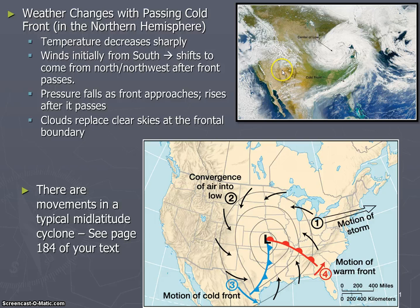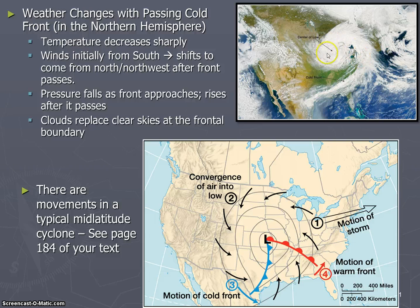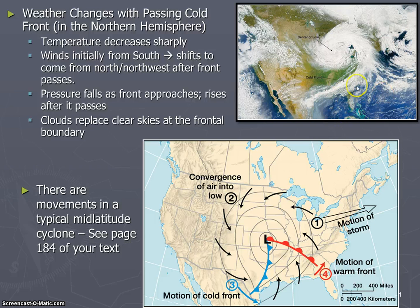Here's your mid-latitude cyclone on a satellite image, with the center of that low visible. It looks like a hurricane, and that's because a hurricane is a form of a cyclone — but in this case it doesn't meet the criteria of a hurricane. As that mid-latitude cyclone and the cold front pass, you're going to see a sharp decrease in temperature. Winds that were initially from the south shift to coming from the north and northwest.